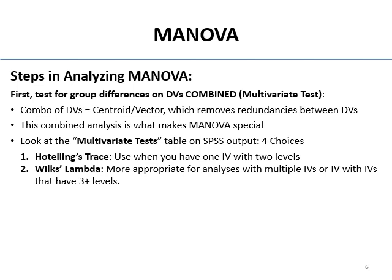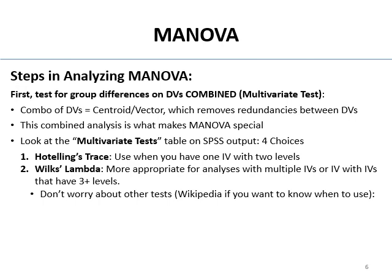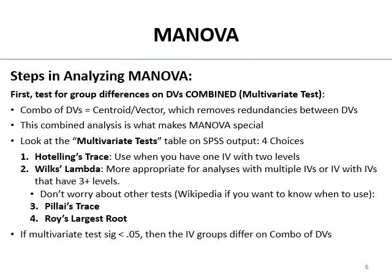Most of the time they don't differ that much. There are also Pillai's Trace and Roy's Largest Root, which have their own specific applications. If your multivariate test significance is less than 0.05, the IV groups differ on the combined centroid DVs. If they differ on the combined DVs, the question then is: how, or who has the higher combined mean?